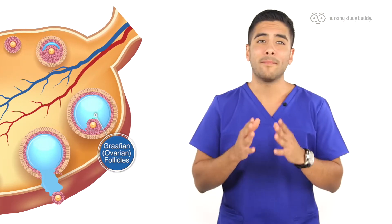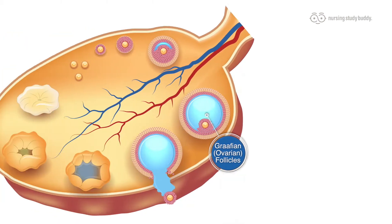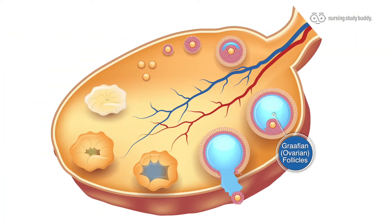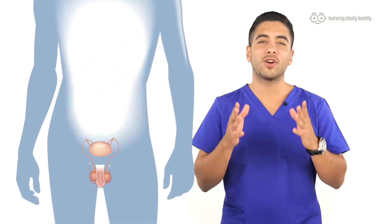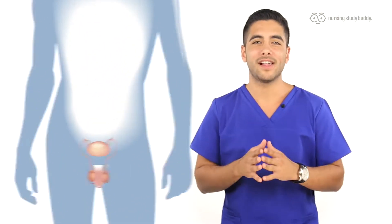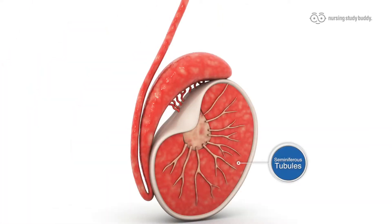Now what is the part that makes progesterone? Well this is called the corpus luteum. Now let's progress to the testes, which is where testosterone is made. The part of the testes responsible for the production of testosterone is called the seminiferous tubules.